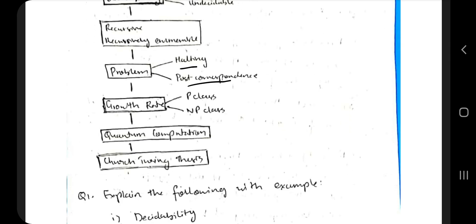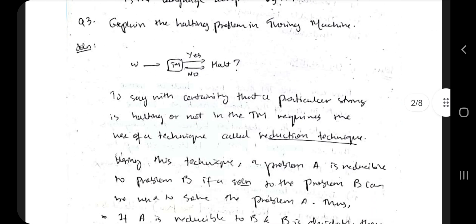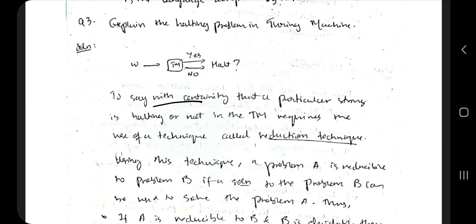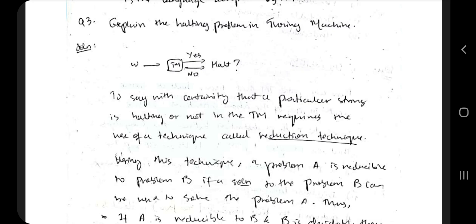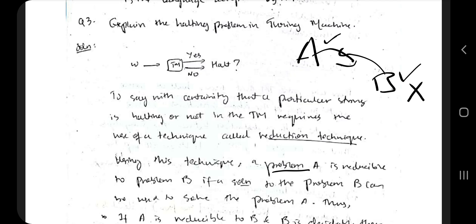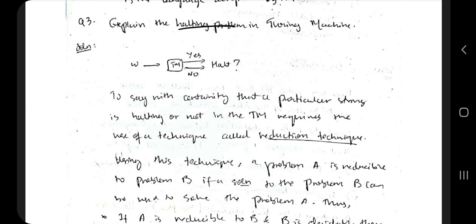The third topic is the halting problem. If there is an input W on a Turing machine and we can say with certainty that it halts, it's a decidable language. We'll be using a technique called the reduction technique to decide if it's halting or not. If problem A is reducible to B, and B is decidable, then A is also decidable. If B is undecidable, A will also be undecidable. The halting problem is solved using the reduction technique.